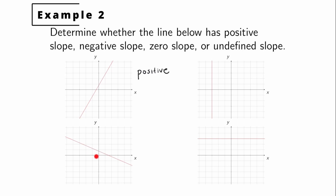For the next line, when the x coordinate is increasing — moving in a positive direction to the right — our y coordinate is decreasing, or going down, moving in a negative direction. So we have a negative change in y divided by a positive change in x. That slope would be negative. As you move to the right, the line travels down — that's what negative slope looks like.